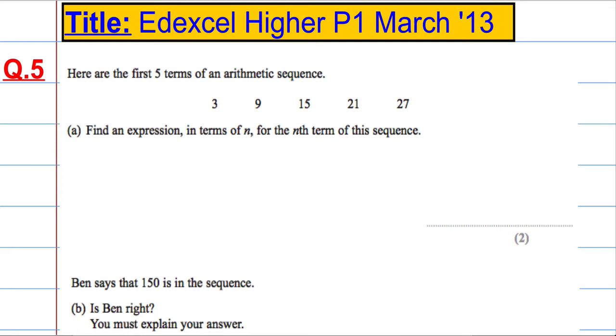Right, so question 5. Here are the first five terms of an arithmetic sequence: 3, 9, 15, 21 and 27.